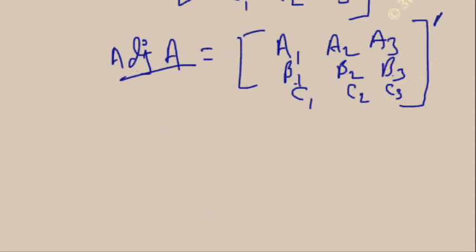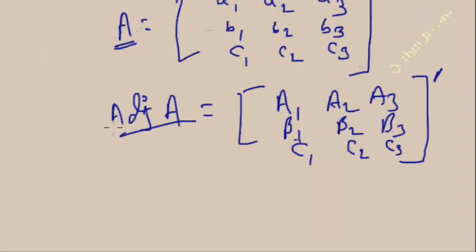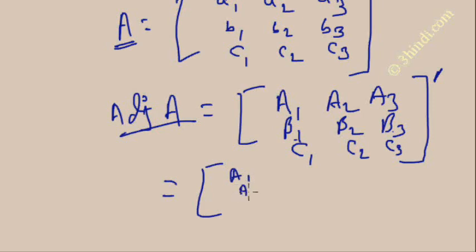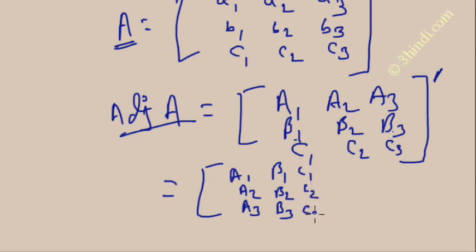To get the adjoint of A, you just need to transpose the cofactor matrix. To make the transpose, remove the first row and make it the first column: A1, A2, A3. Remove the second row and make it the second column: B1, B2, B3. Remove the third row and make it the third column: C1, C2, C3. So this is the adjoint of A.